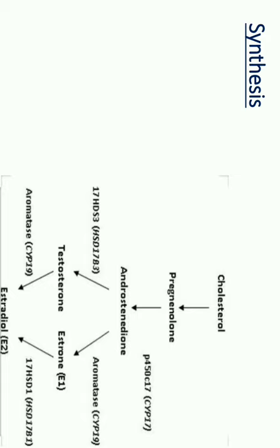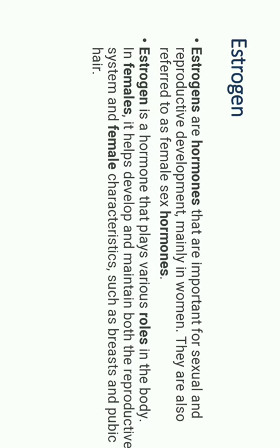In plasma, estrogen is transported mainly by albumin and a small quantity by globulin. It is degraded in the liver and excreted mainly in urine, with a small quantity also in bile. Estrogen hormones are important for sexual and reproductive development mainly in women and are also referred to as female sex hormones. In females, estrogen helps in development and maintenance of both the reproductive system and female characteristics such as breast, pubic, and scalp hair.